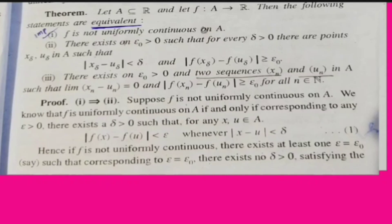We will prove that f1 is not uniformly continuous. We will prove that if epsilon is greater than 0 and delta is greater than 0, then there exist x and u such that f(x) minus f(u) is less than epsilon.